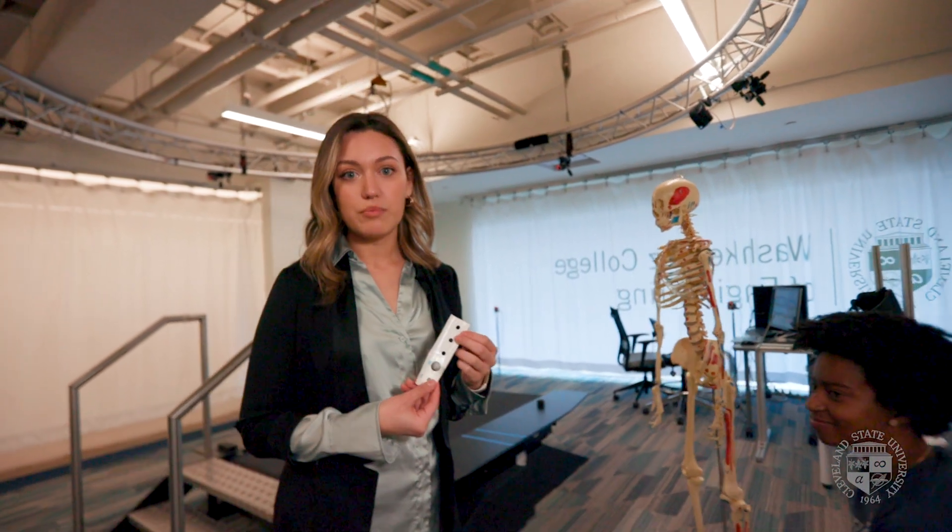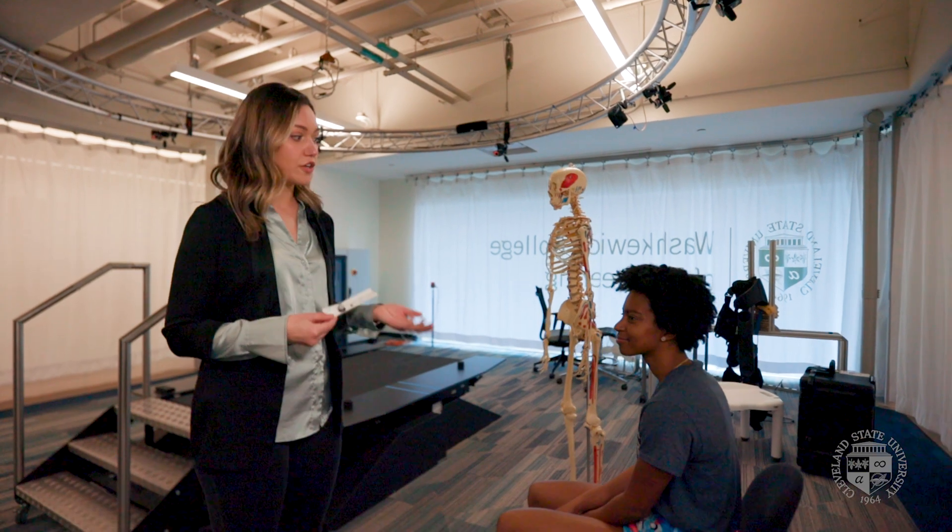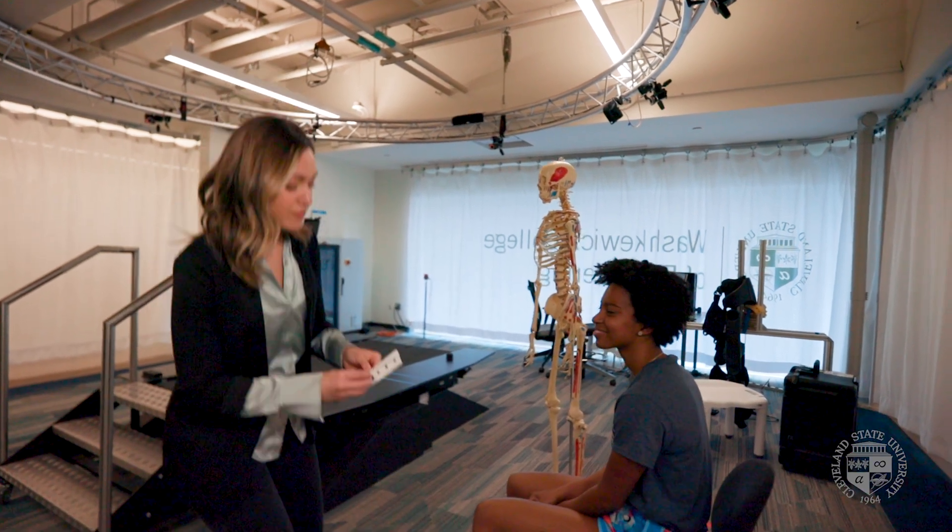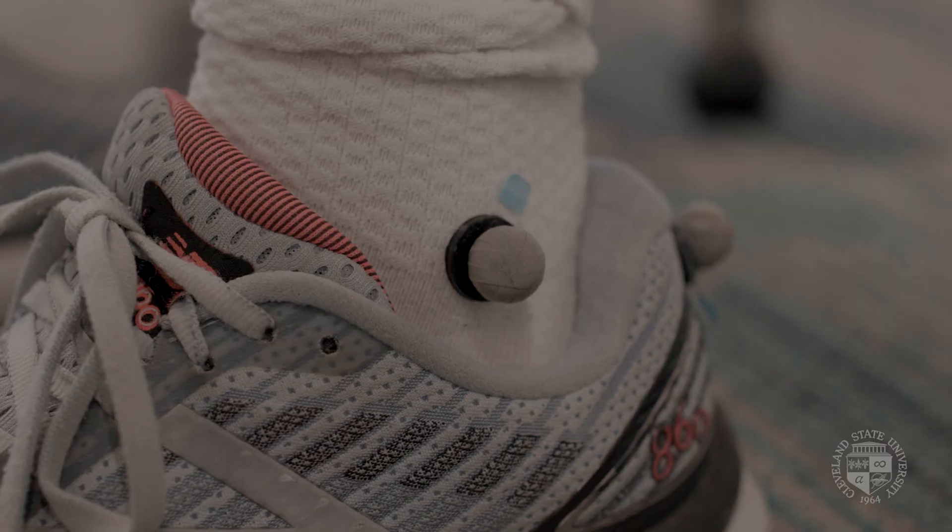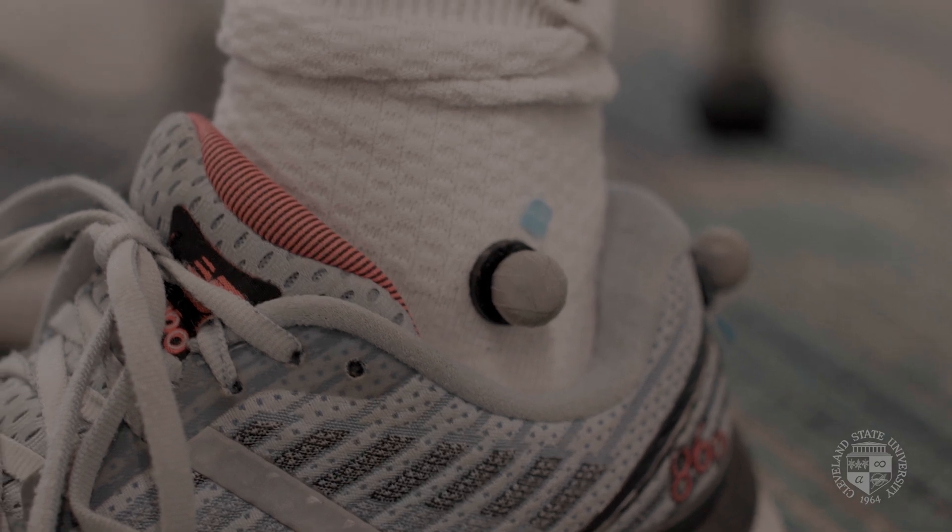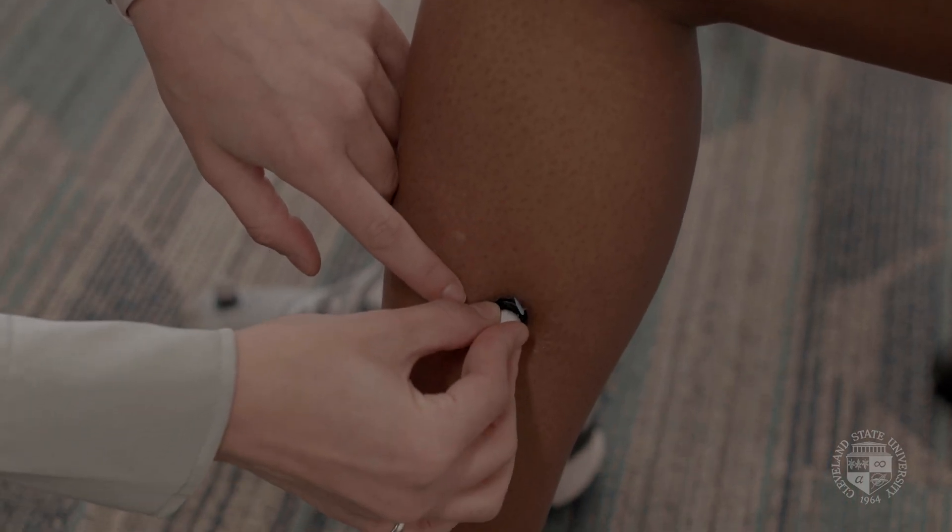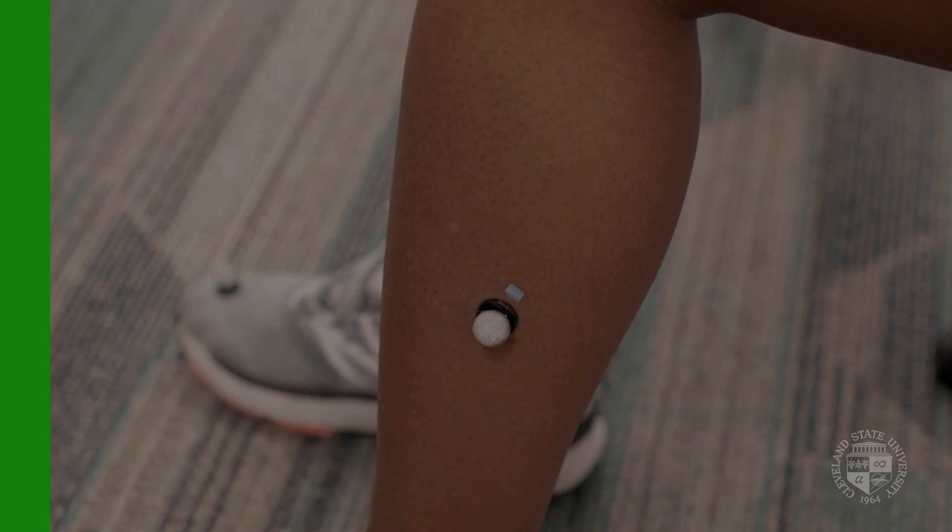So I'm going to show you how we apply these retroreflective markers on a human subject with my lab mate Taylor. When we apply these markers, we're looking for bony landmarks. This allows us to track somebody's motion in 3D space and then create models with them.